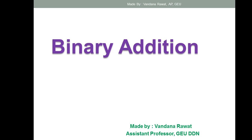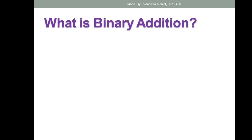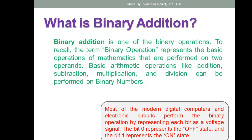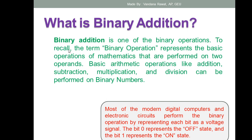So let us have a look at this topic — binary addition. First of all, what do you mean by binary addition? Binary addition is one of the binary operations. To recall, the term binary operation represents the basic operations of mathematics that are performed on two operands. Basic mathematical operations like addition, subtraction, multiplication, and division can be performed on binary numbers just like in normal mathematics. In binary addition we will have binary digits in the form of zero and one, because binary numbers are always represented with zero and one.